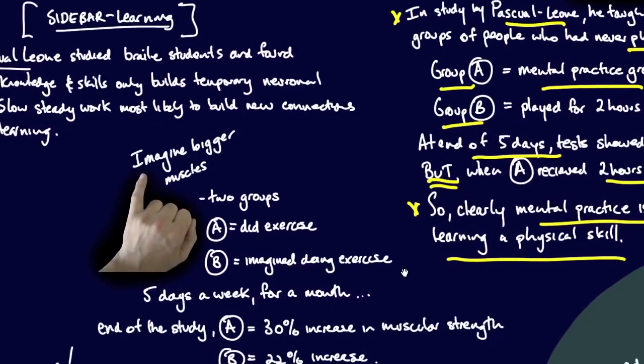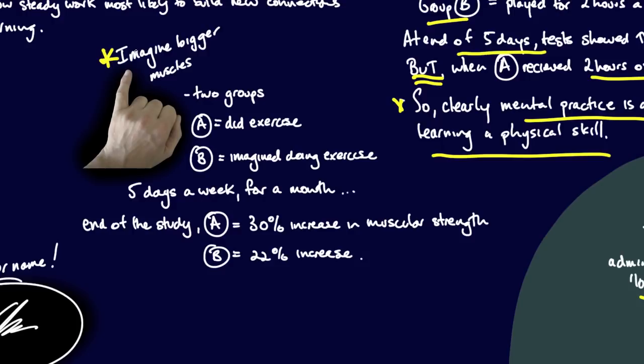Imagining bigger muscles. I love this one. Two groups exercising the pinky of all muscles. Hilarious. Group A did exercise. Group B imagined doing exercise five days a week for a month, exercising their little pinky.